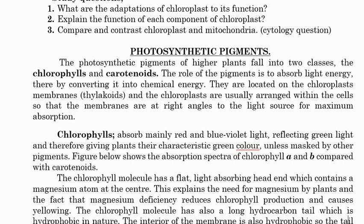Now let's start looking at the chlorophylls. Chlorophylls absorb mainly red and blue-violet light — you should understand this because a teacher can ask a question about this. Chlorophylls absorb red and blue-violet light, reflecting green light, and therefore giving plants their characteristic green color. Plants appear green because the chlorophyll reflects the green color — as you studied in physics, the color which is reflected is the one observed by our eyes — unless masked by another pigment.